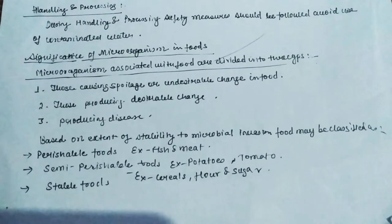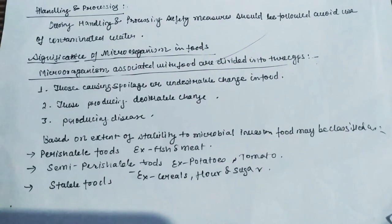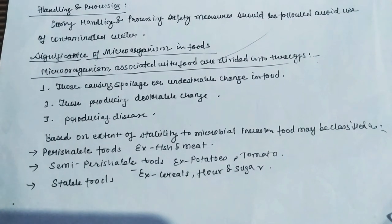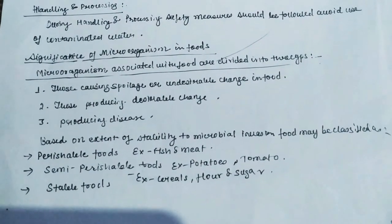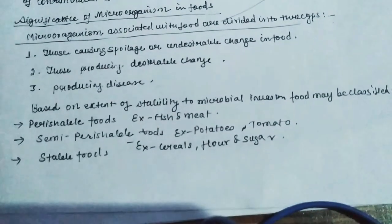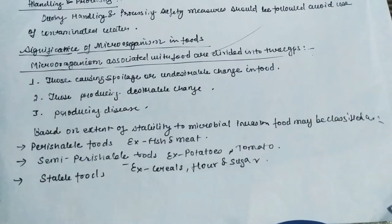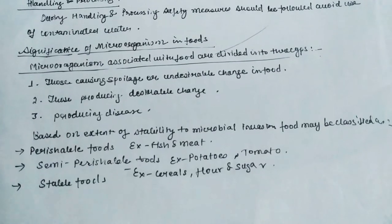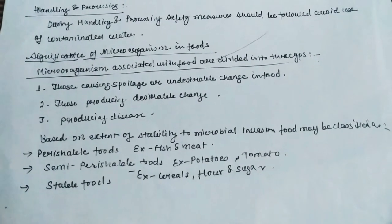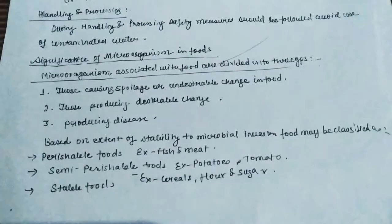The significance of microorganisms in food: microorganisms associated with food are divided into three parts — those causing spoilage or undesirable change in food, those producing desirable change, and those producing disease. Based on microbial stability, food may be classified as perishable food such as fish and meat, semi-perishable food such as potato and tomato, and stable food such as cereal flour and sugar.